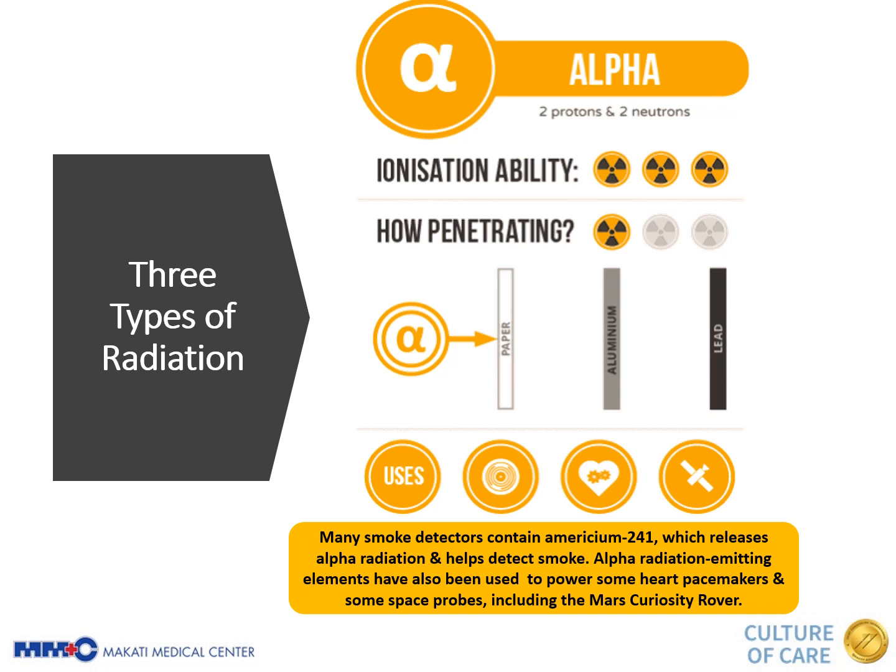Now let's talk about the three types of ionizing radiation: alpha, beta, and gamma. For the first one, alpha particles are found in smoke detectors and can easily be shielded by a piece of paper. Between the three types, alpha is the least penetrating but has the highest ionization ability.